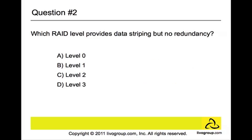Question number two. Which RAID level provides data stripping but no redundancy? Is it level 0, level 1, level 2, or level 3? The answer is level 0. Level 0 is a striped disk without fault tolerance, so if one fails, all data in the array is lost. This is used for performance only and not for redundancy.